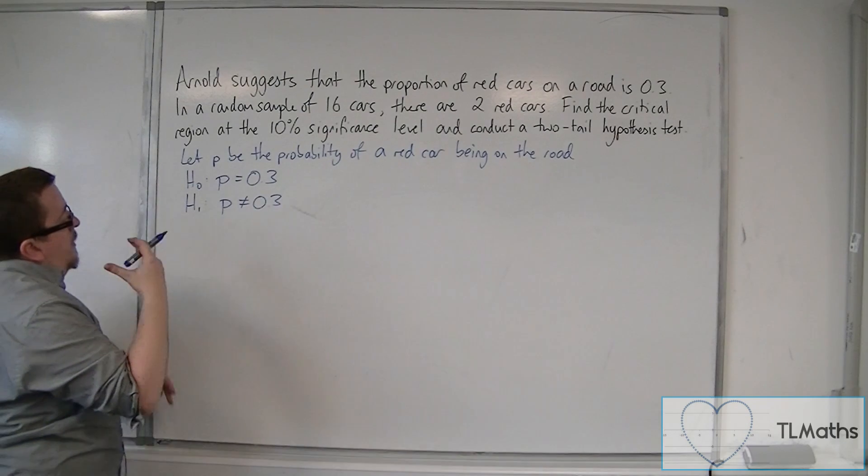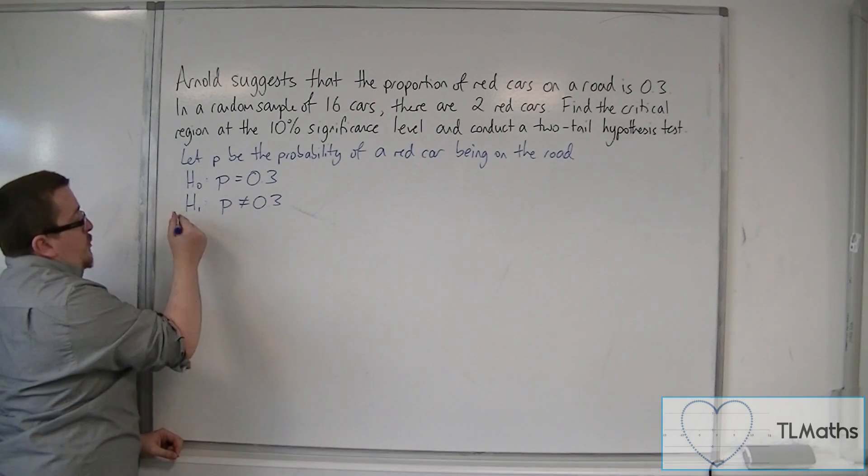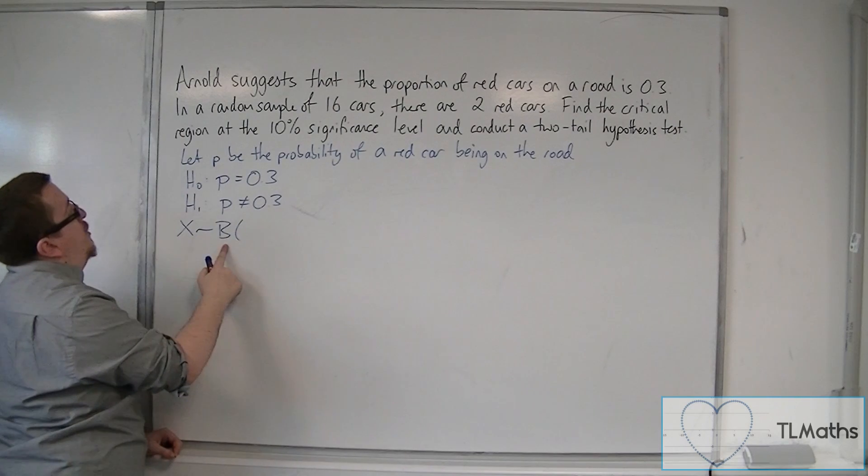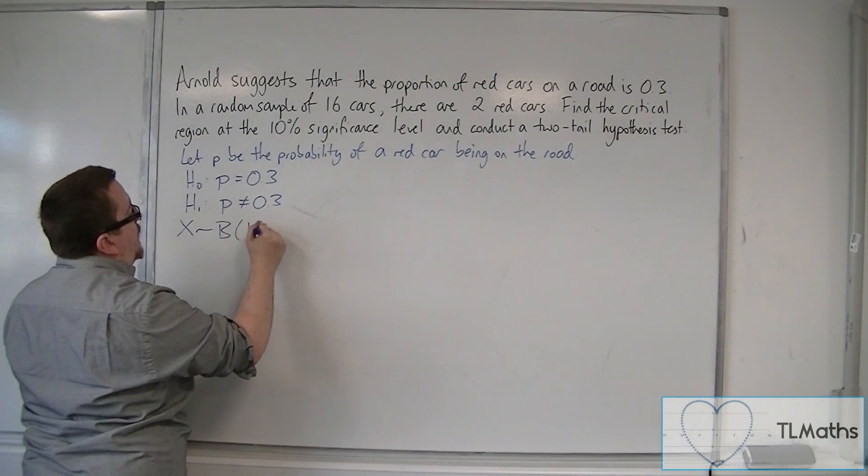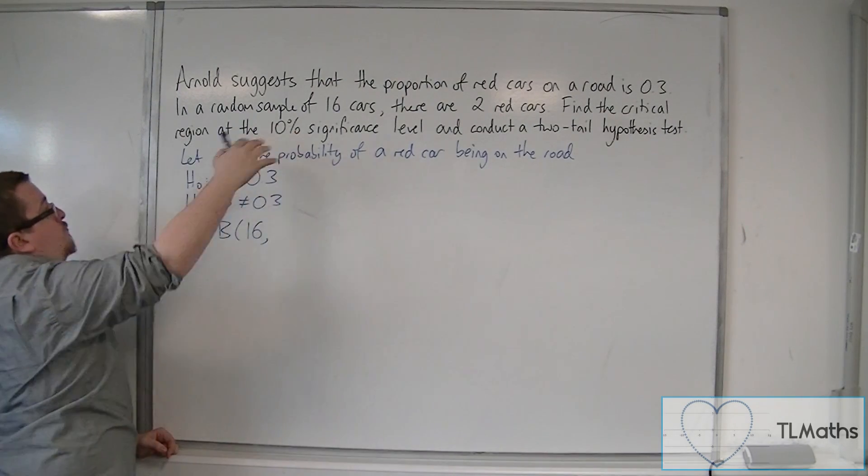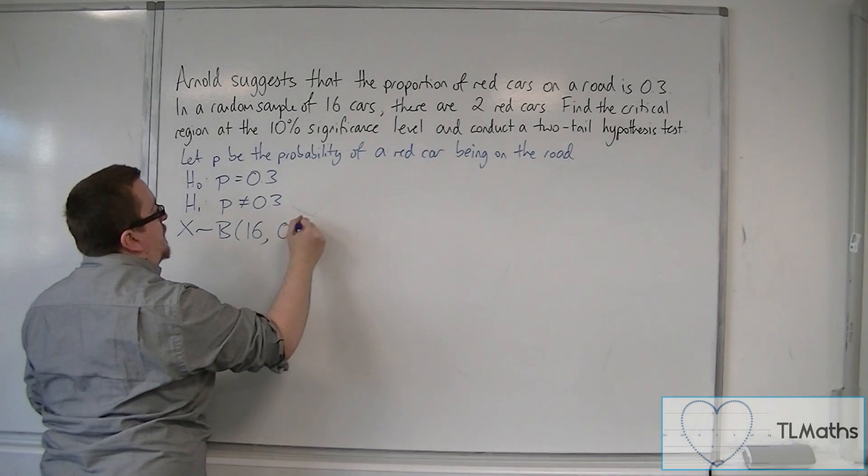Assuming that H0 is true, we set up a binomial distribution. X is binomially distributed with an N of 16 cars, that was in the random sample, and a probability of 0.3.